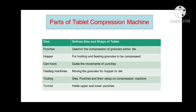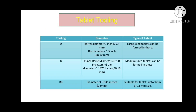Next, the hopper is for holding and feeding granules to be compressed. Next, the cam track guides the movements of the punches. Next, feeding machines move the granules from the hopper to the die. Tooling refers to dies, punches, and their setup on the compression machine. Last, the turret holds the upper and lower punches.